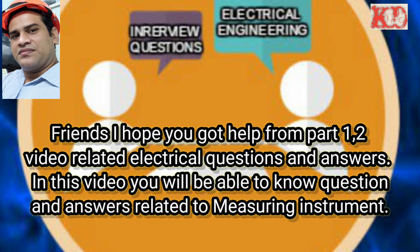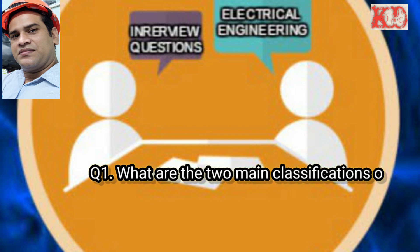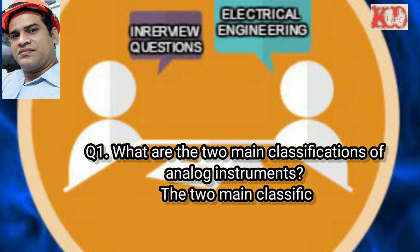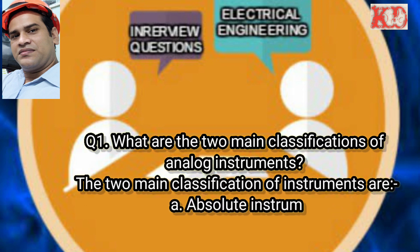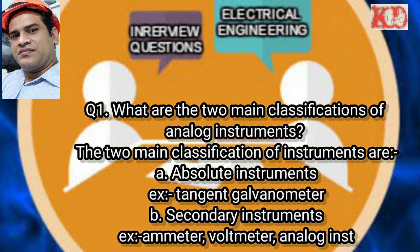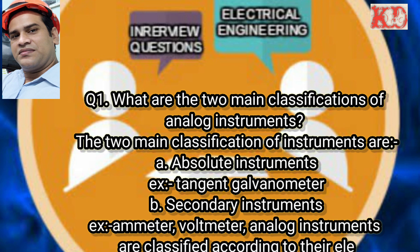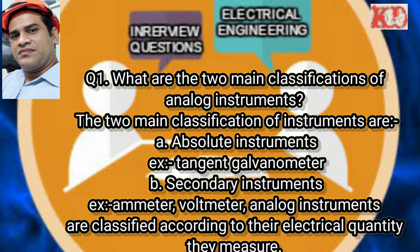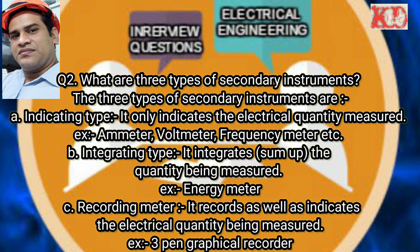Question number one: What are the two main classifications of analog instruments? The two main classifications are: first, absolute instruments — example, tangent galvanometer — and second, secondary instruments — example, ammeter, voltmeter. Analog instruments are also classified according to the electrical quantity they measure, such as frequency meter, voltmeter, and the principles they work on, such as moving coil and induction.